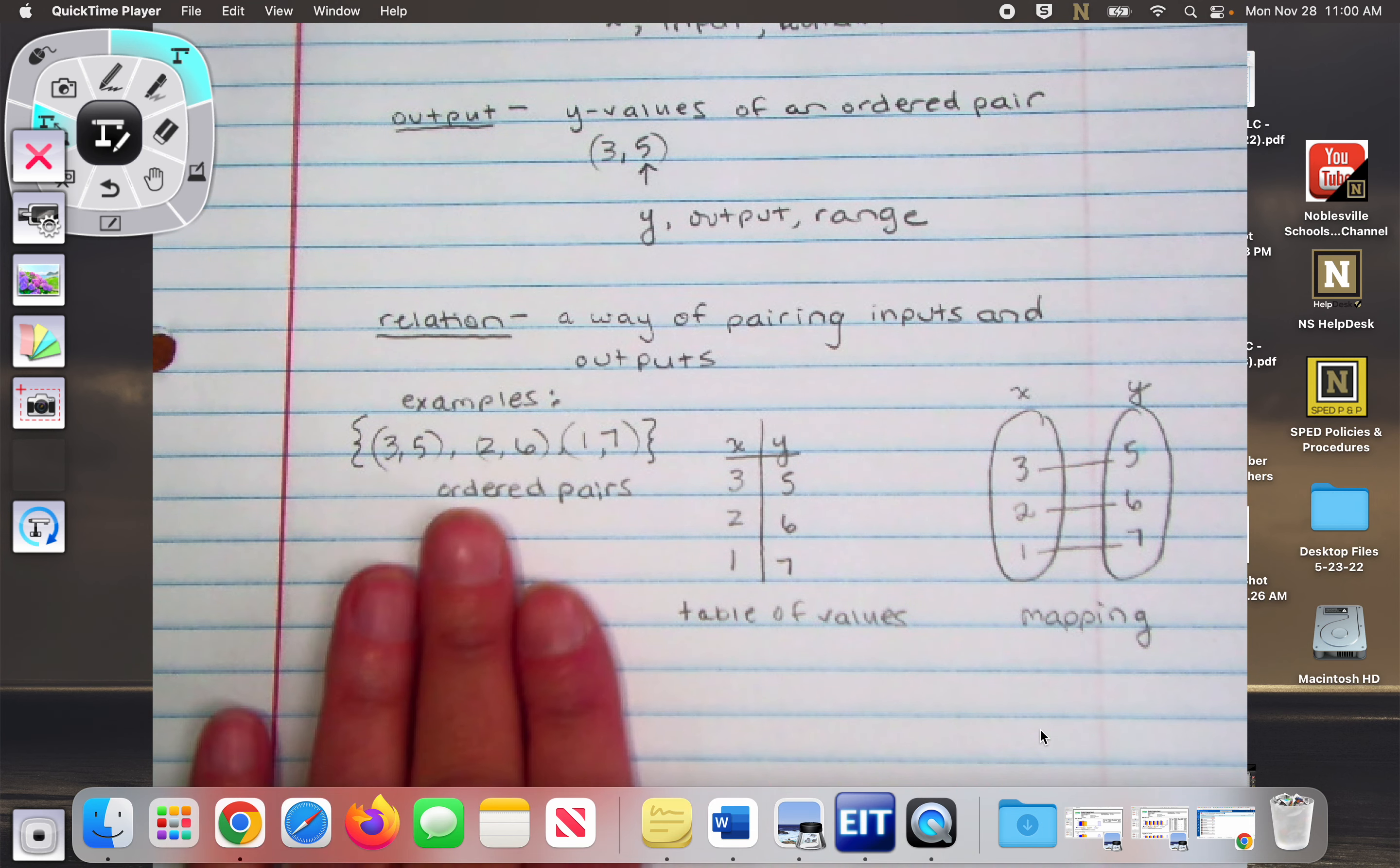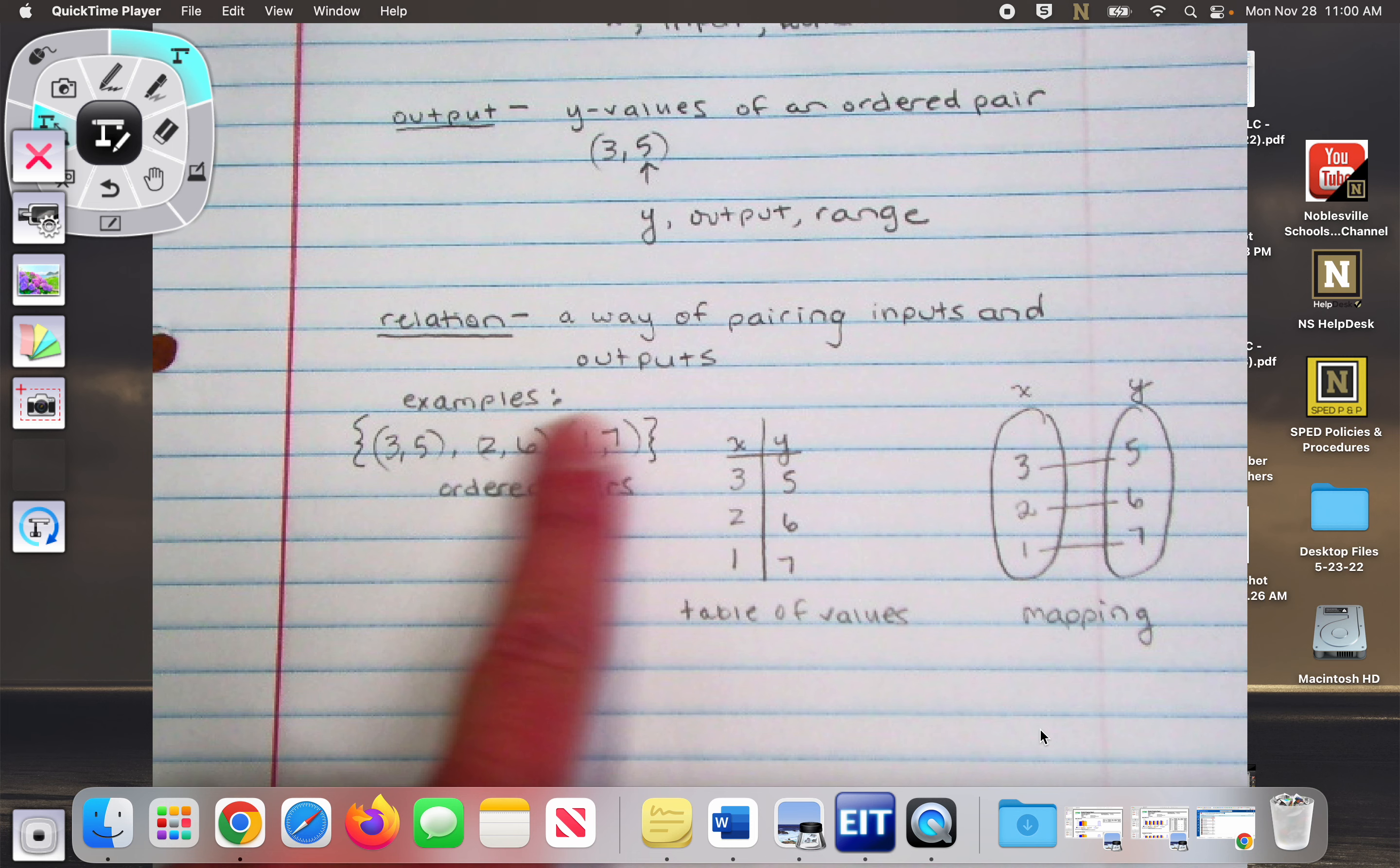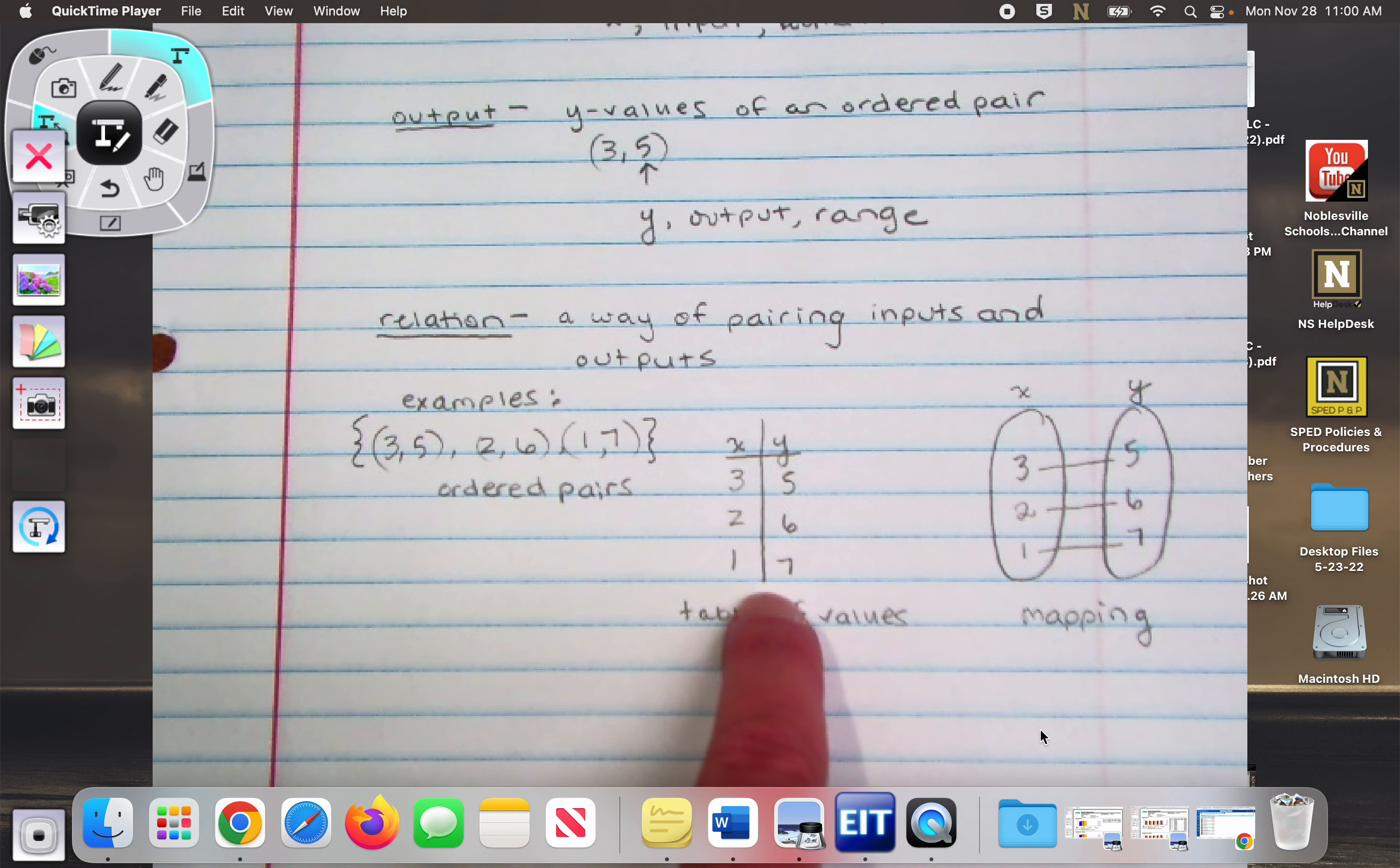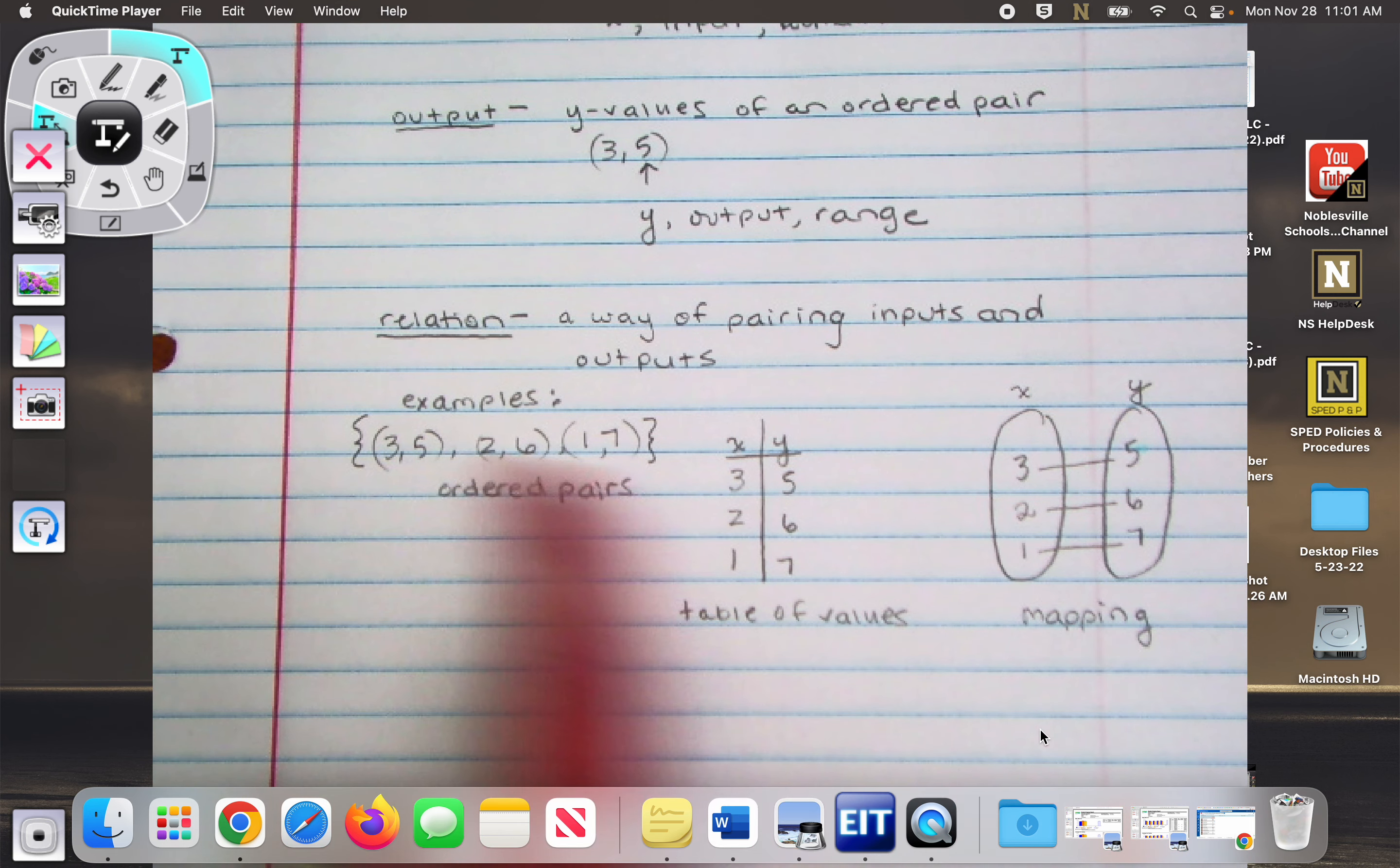So these are three different ways that you can show pairings of inputs and outputs. And I used the same inputs and outputs for each one. I have these ordered pairs that I then took and made into a table. And then I took that table and made it into a mapping, connecting the ones that go together. I did not mix match. Does everybody understand that? Yes. Okay.